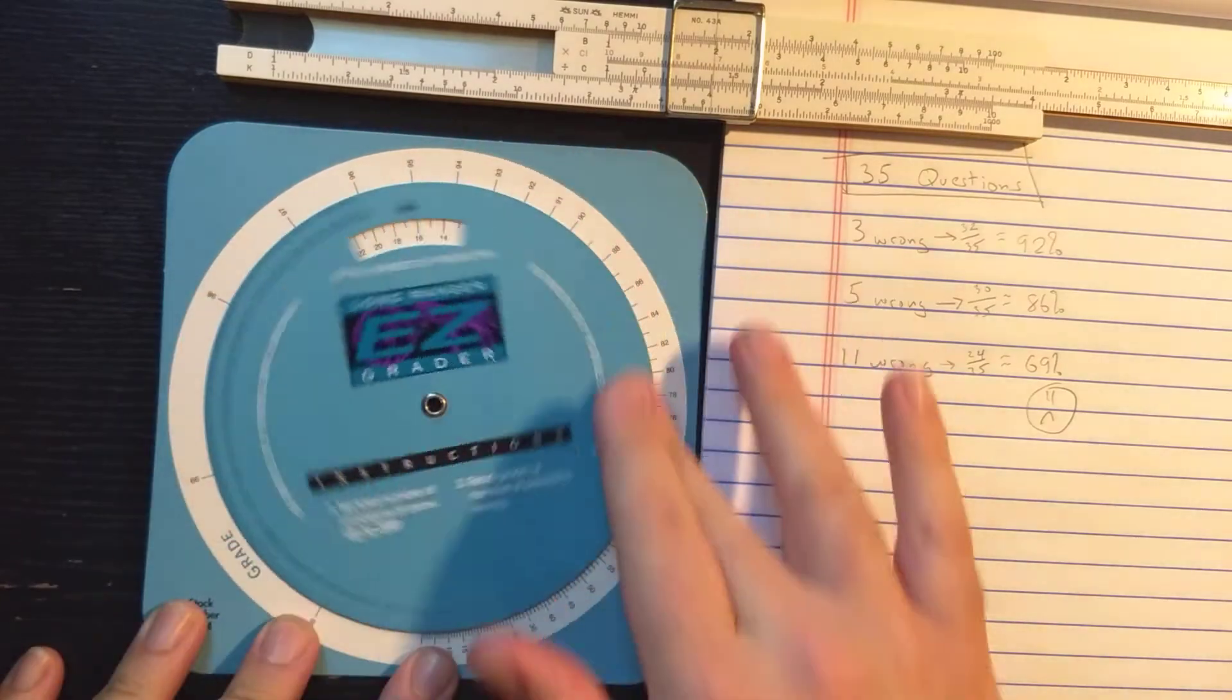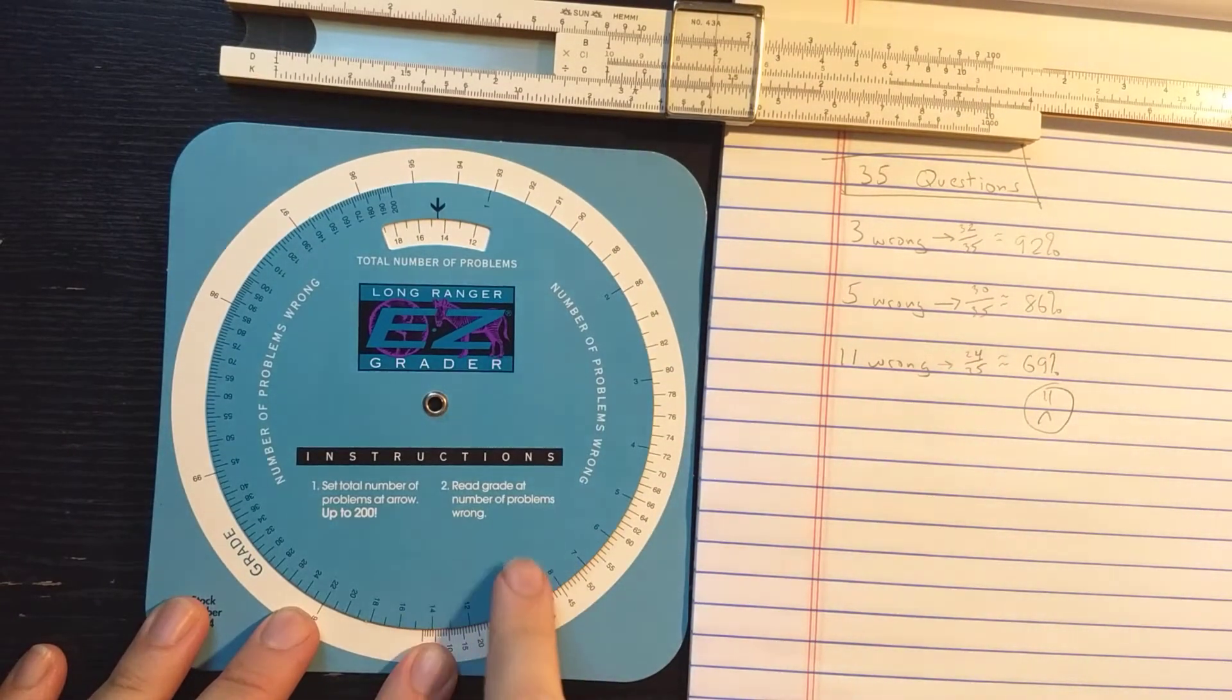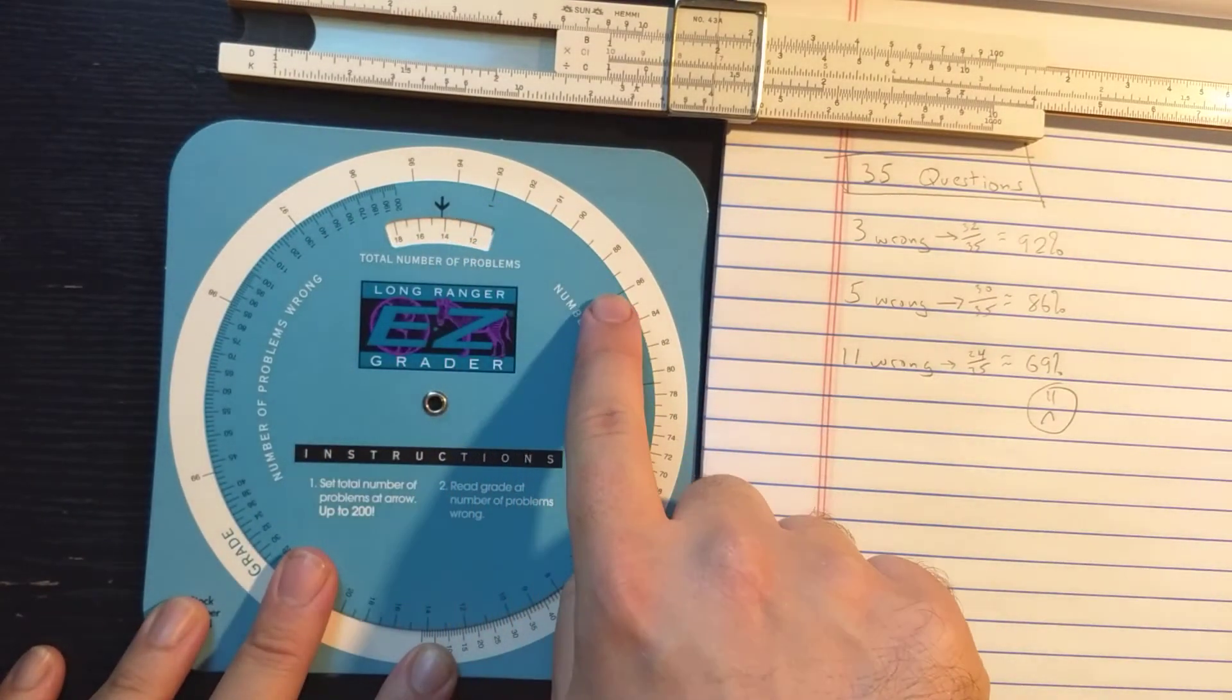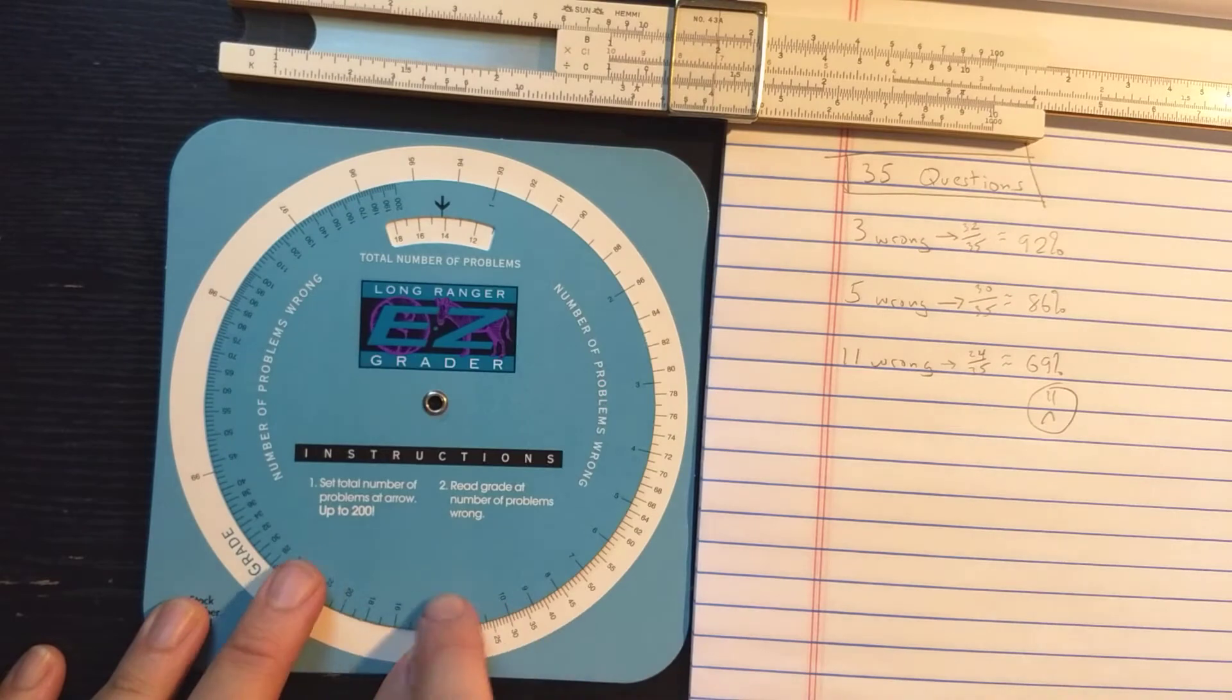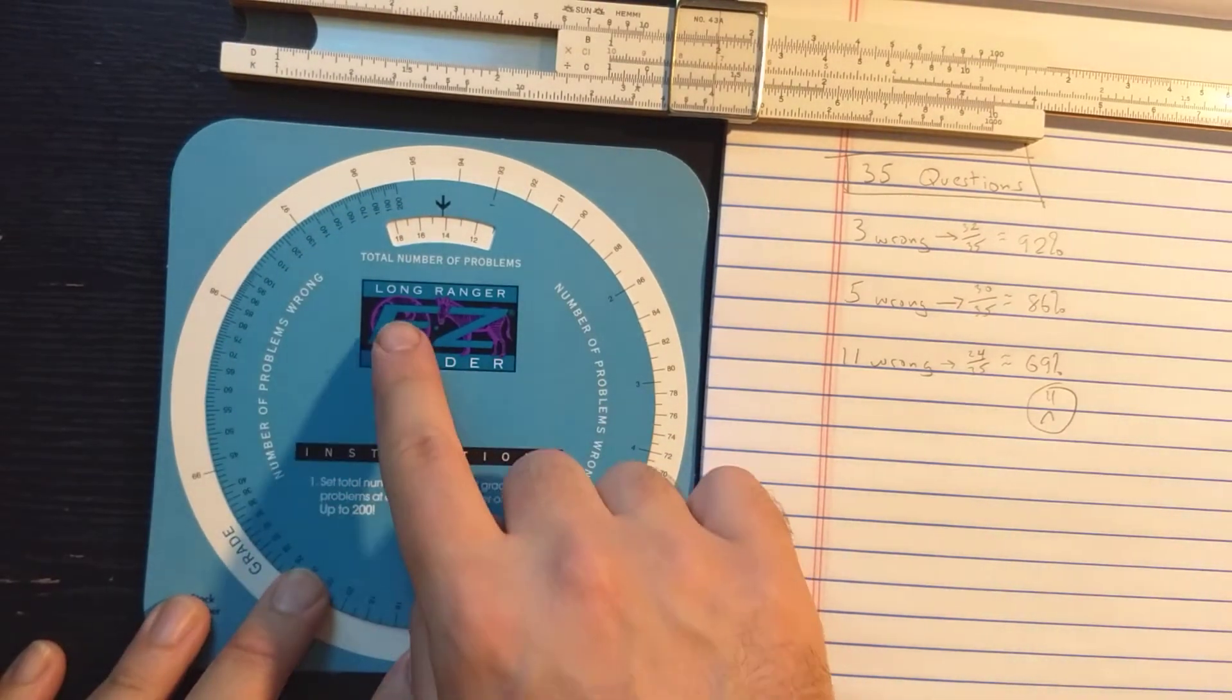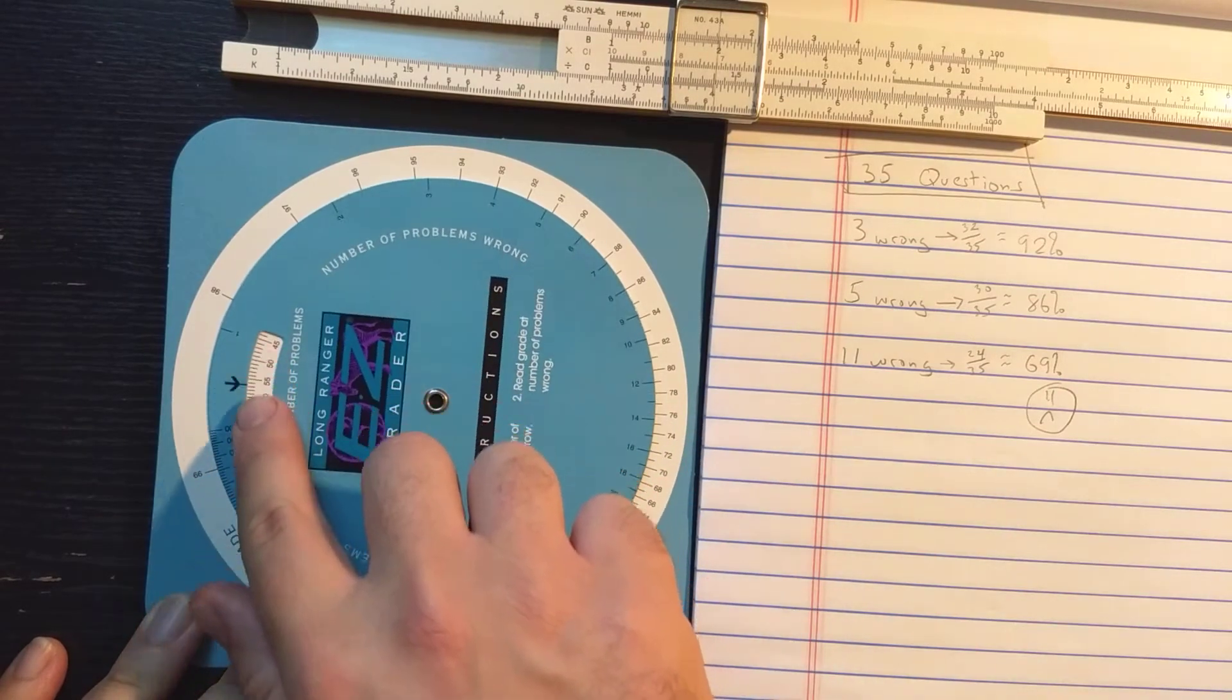So I would say a slide roll needs two logarithmic scales, and the Easy Grader has two logarithmic scales, one here going around the outside. One, two, three, four. It goes up to 200. The other logarithmic scale is identical, but in reverse, and it's underneath. See there? It's this scale.